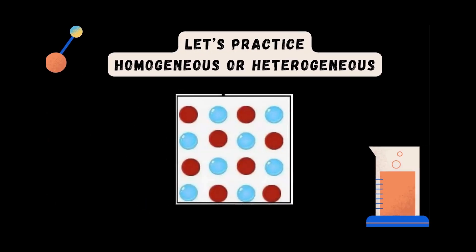Looking at these particles, are they homogeneous or heterogeneous? These particles are homogeneous. As you can see, they are pretty uniform throughout, forming a pattern, and if we were to select a sample, the samples would mostly be the same.